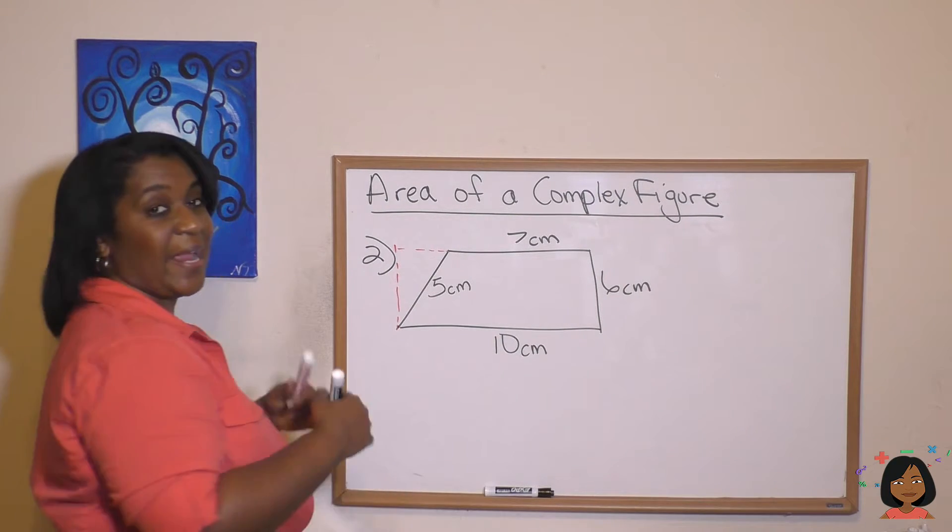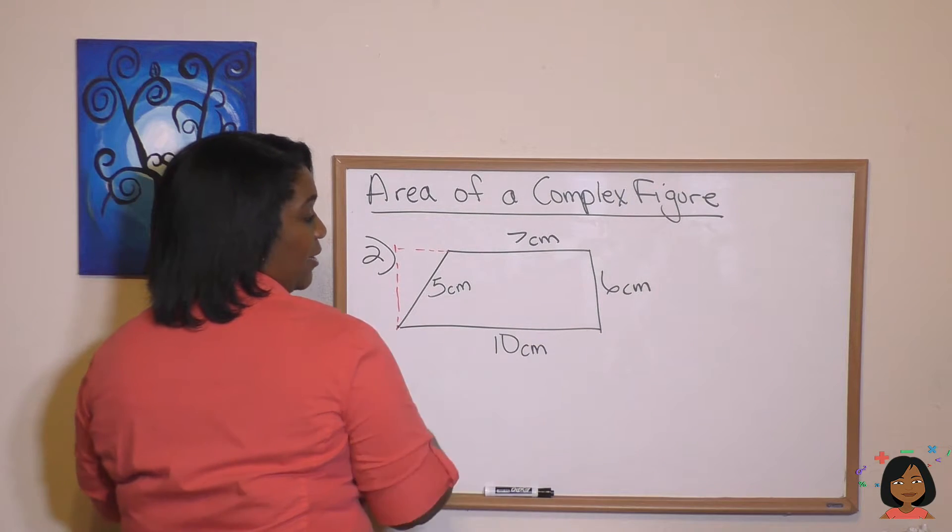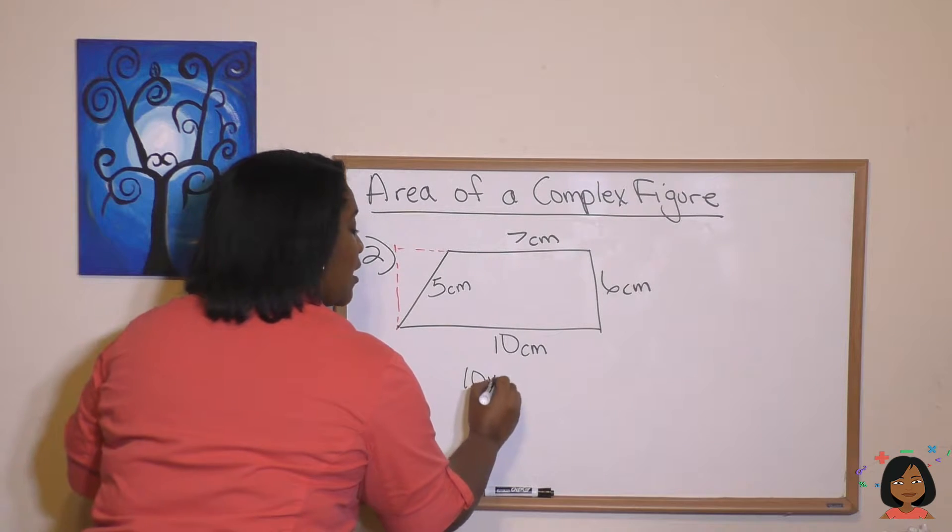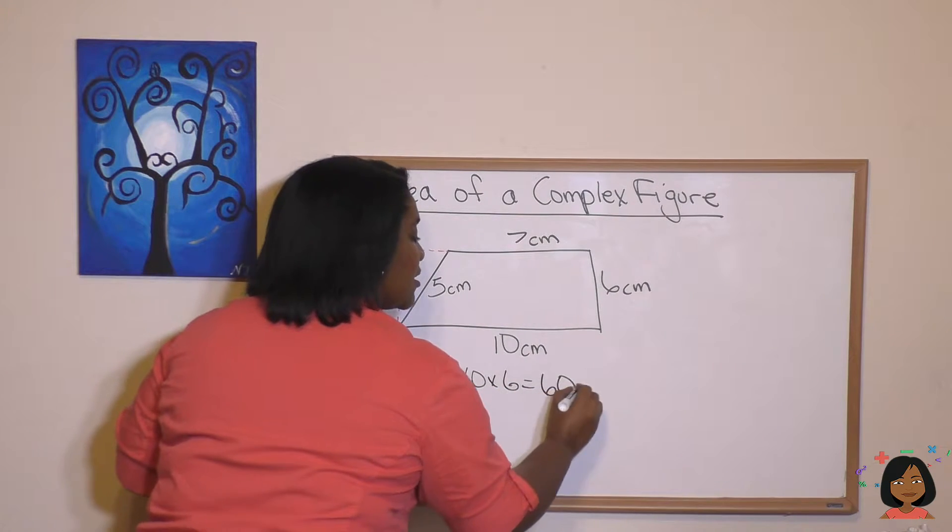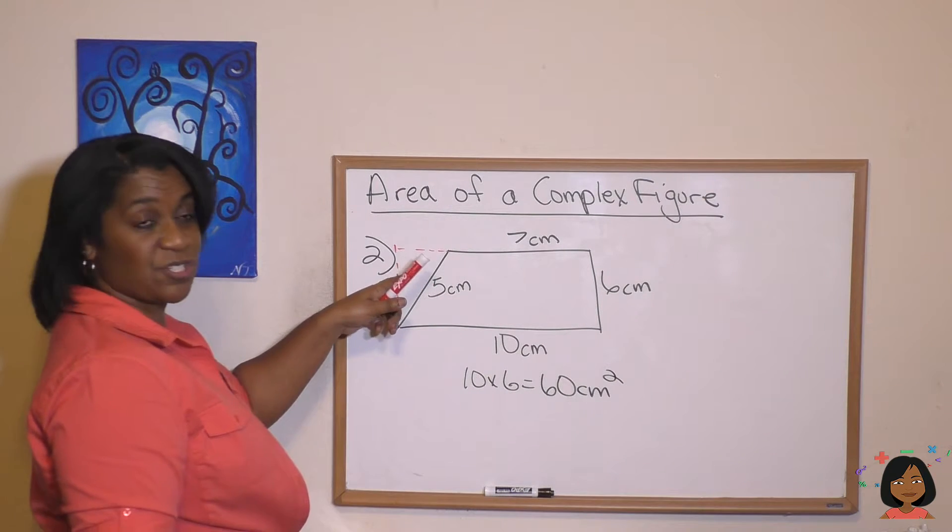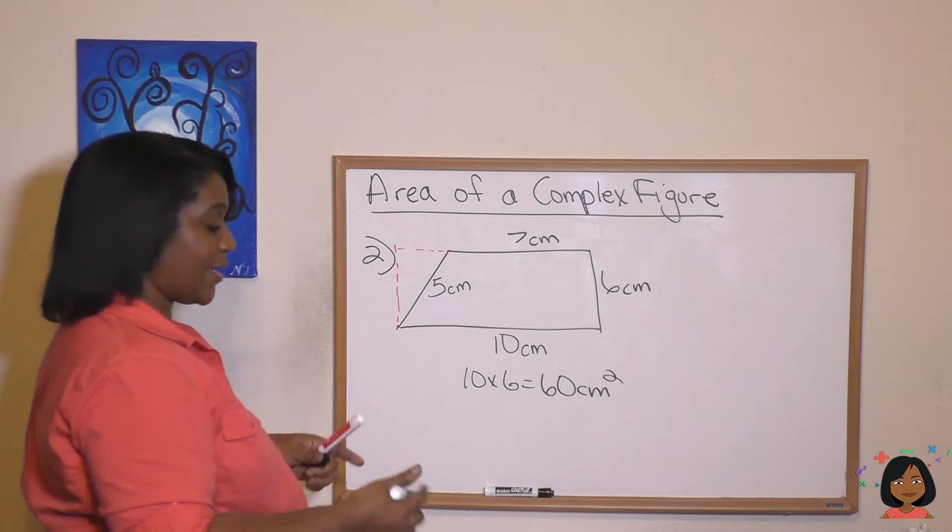The entire area of the rectangle is going to be 10 length times 6. So 10 times 6 equals 60 centimeters squared. That's the entire rectangle. But we want to figure out how much this triangle is and then subtract it out.